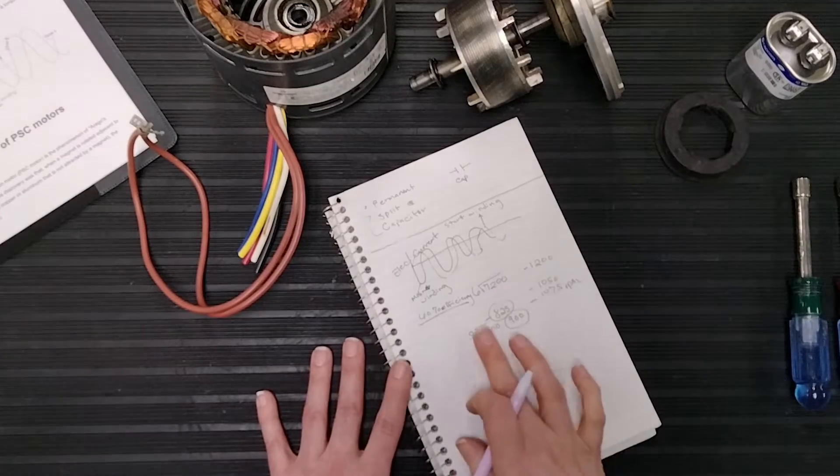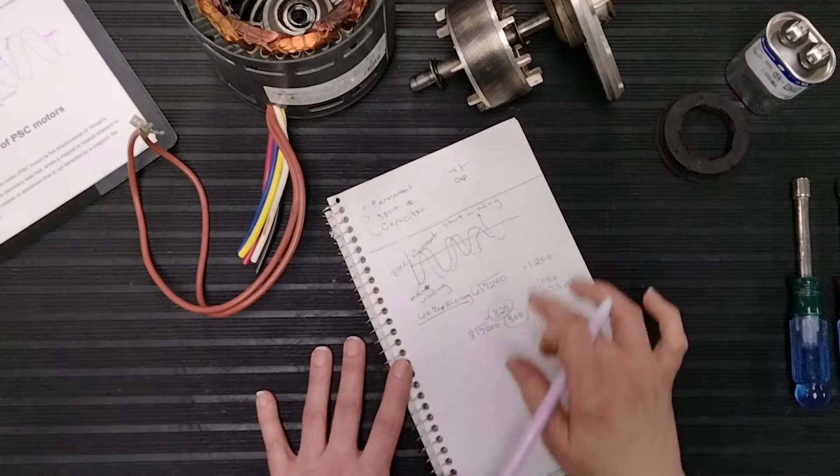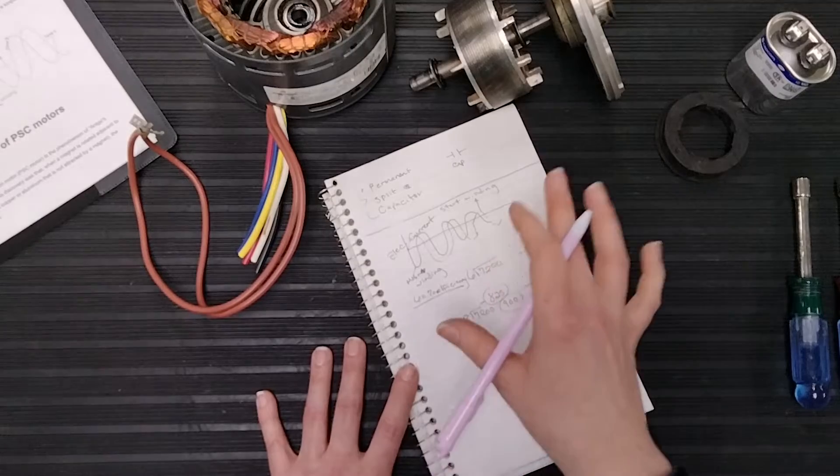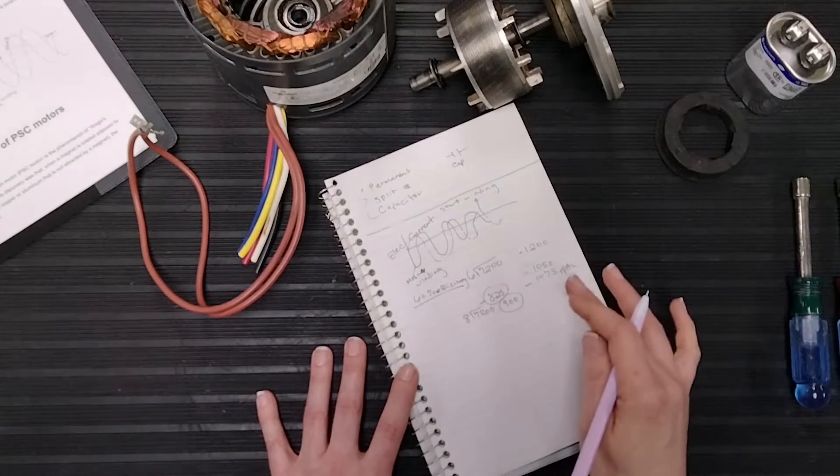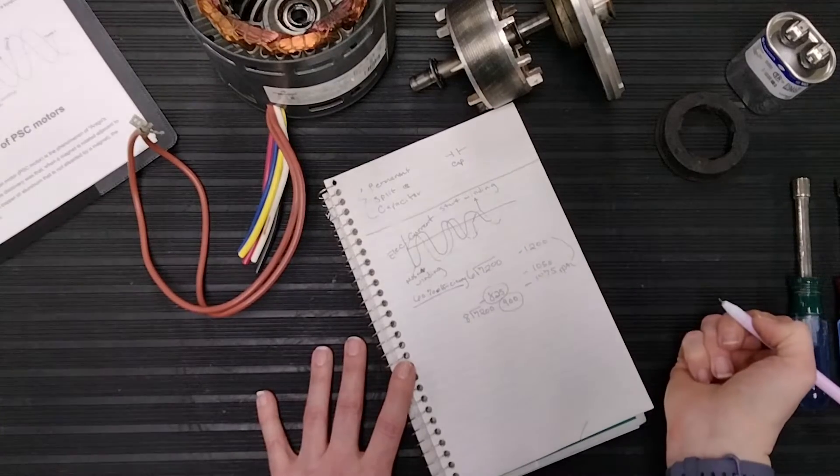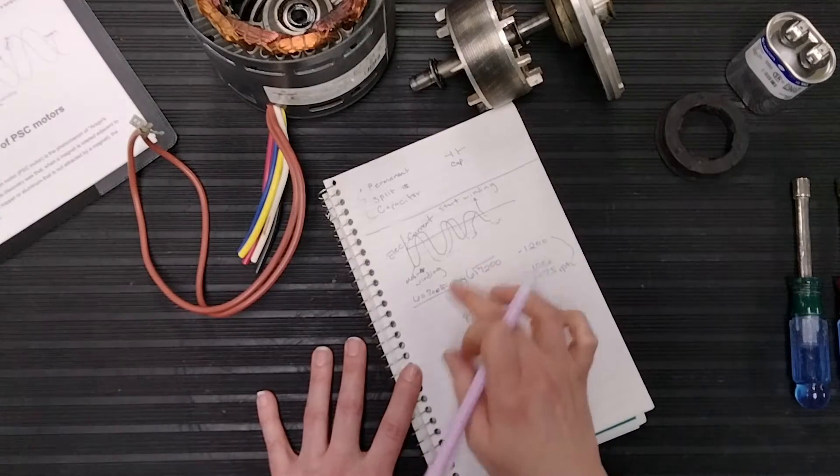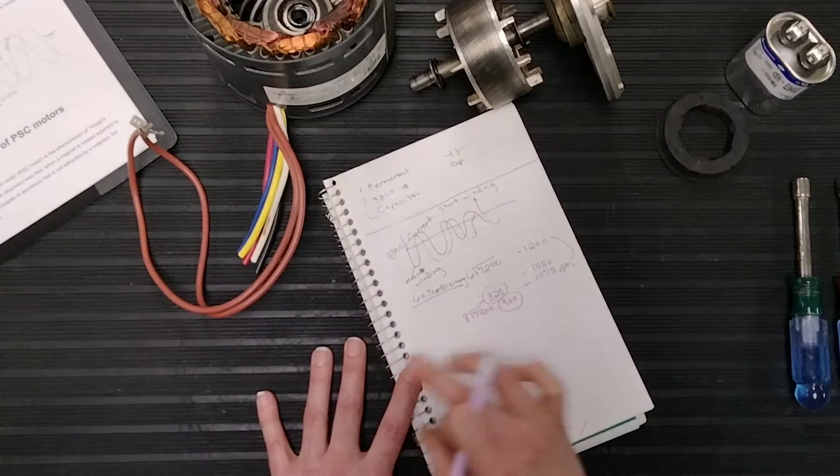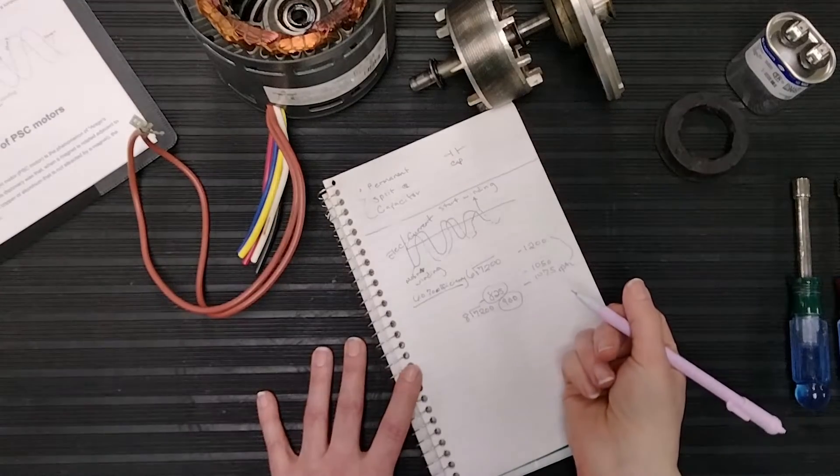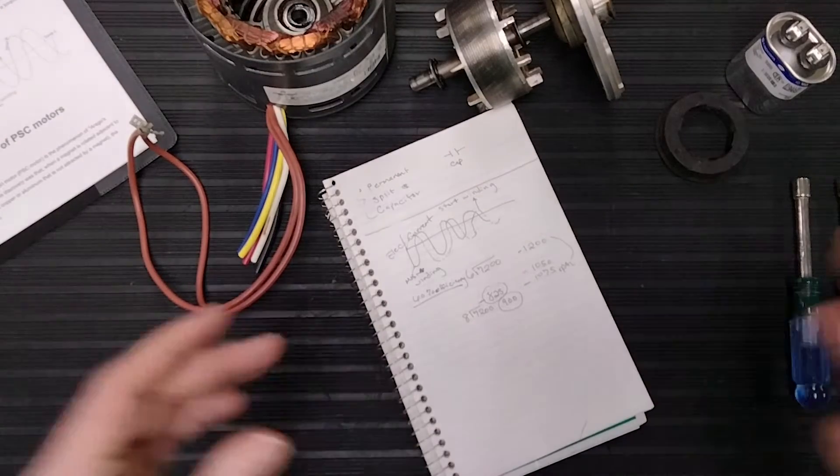What else could happen when we replace that with that 1200 RPM motor? Well, it has a fan blade, or a blower wheel, that is placed on there, designed for this RPM. So if we place the wrong RPM on that, now we've messed up the blower wheel, or the fan blade, from what it was originally designed to run on.